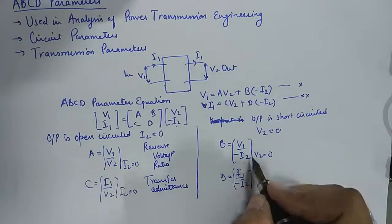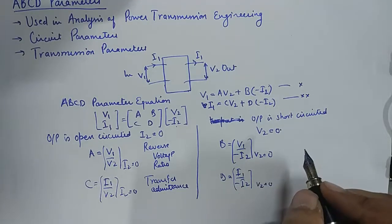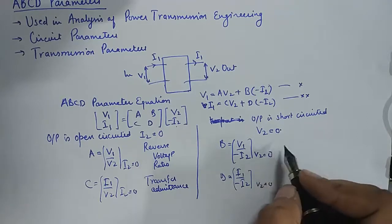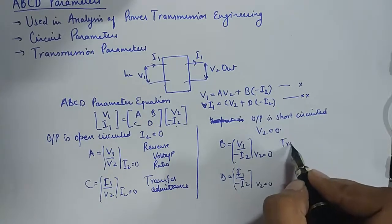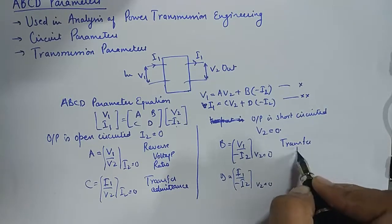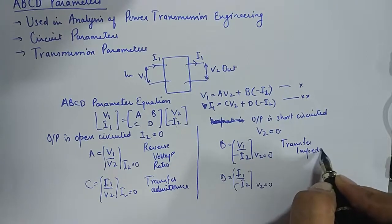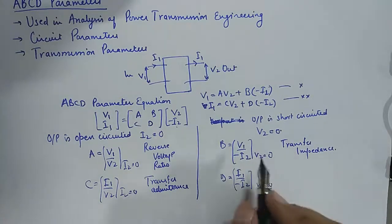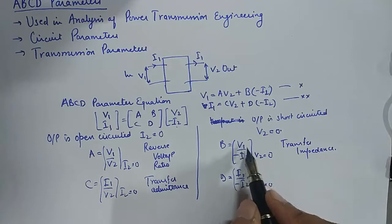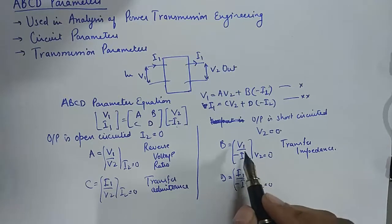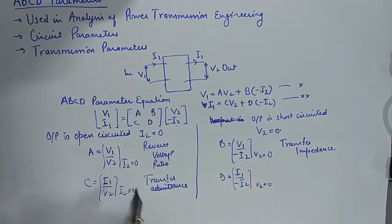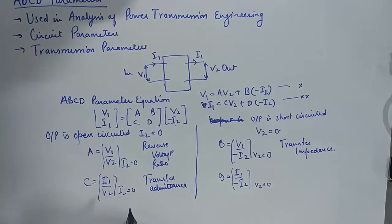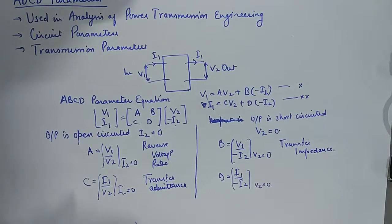B is the ratio of voltage to current, so this will be impedance and known as transfer impedance. The reason why it's known as transfer impedance is because we are considering voltage at port 1 and current at port 2. Over here the current is at port 1, voltage is at port 2, so that is why they are known as transfer impedances and admittances respectively.